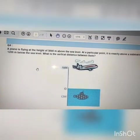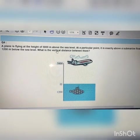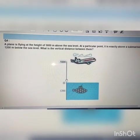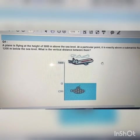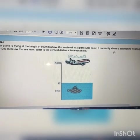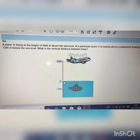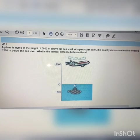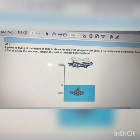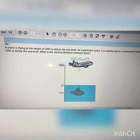Now let's see the question. A plane is flying at the height of 5000 meters above sea level. Just suppose that this is your sea level. So above this, at 5000 meters, the plane is flying. At a particular point, it is exactly above a submarine floating 1200 meters below sea level. So below this sea level, at 1200 meters distance, the submarine is floating. What is the vertical distance between them? Vertical distance means this distance, distance between submarine and plane. This distance find.